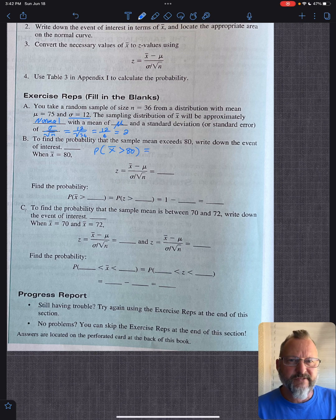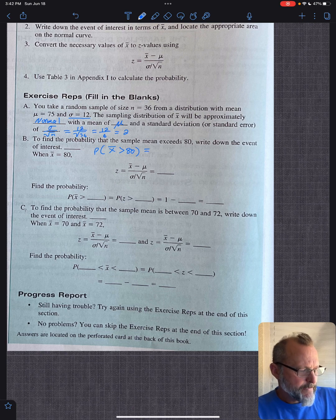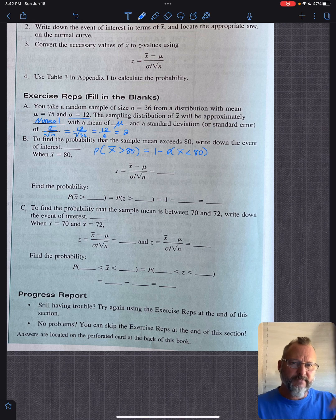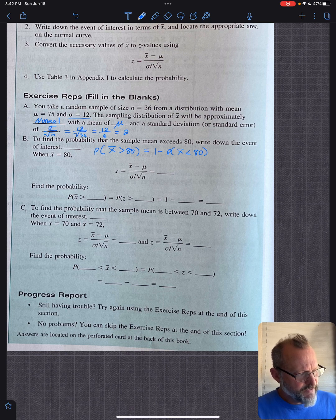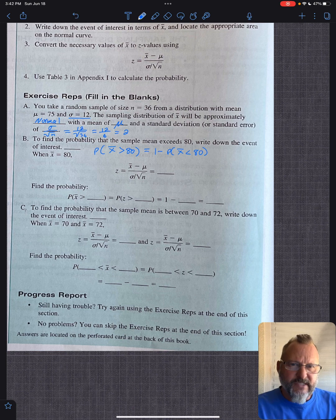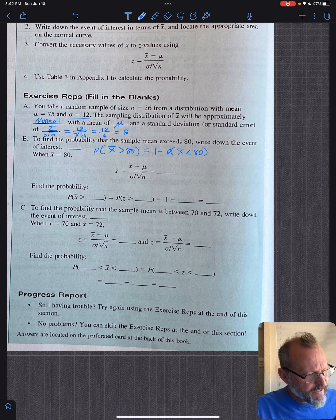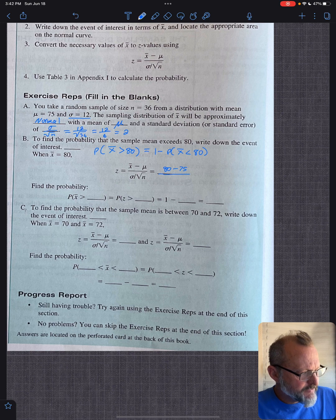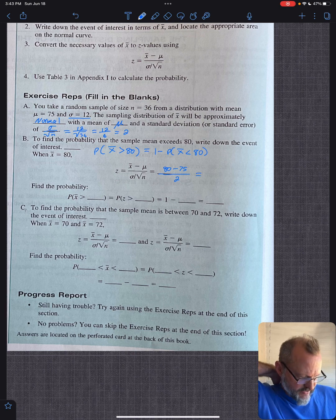That is equal to, because of the tables, this is how you calculate it, that is 1 minus the probability that X bar is less than 80. Because remember, it's summed from bottom to top, from left to right. So then, let's calculate the Z score. So now you've got to convert that to Z score, so that we may use the tables. So if we convert that to Z score, X bar is 80, so this is 80 minus mu, which is 75, divided by 2.